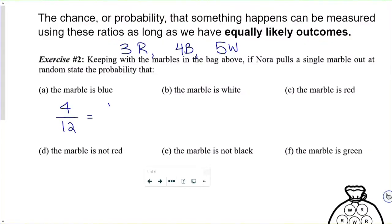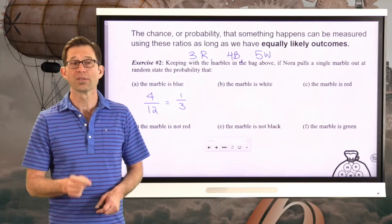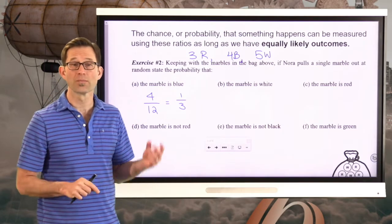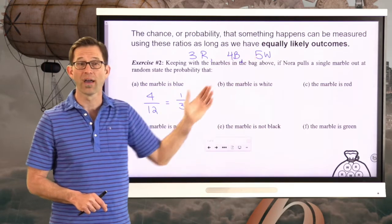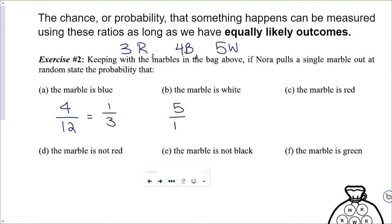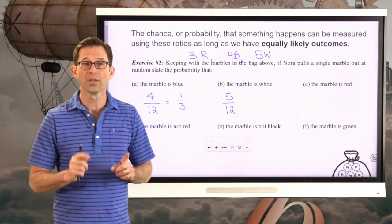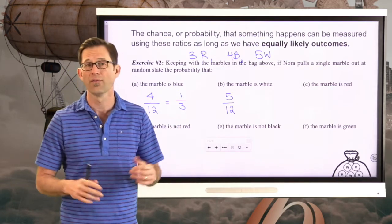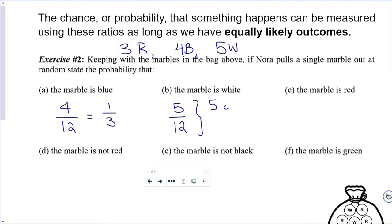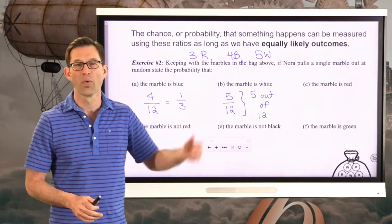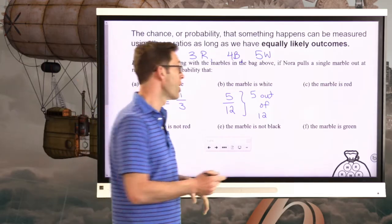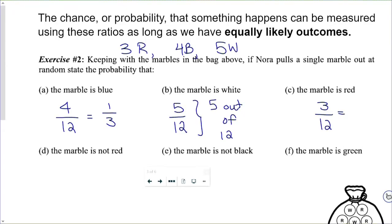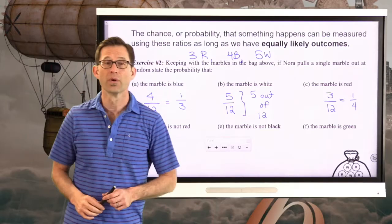A probability ratio is a fraction. Oftentimes it can be left in its unreduced form; sometimes your teacher will want you to reduce it. If it doesn't say you have to reduce it, either answer is great. The probability the marble is white is 5 twelfths. Ratios are so common in probability that you'll even hear teachers say things like 'five out of twelve' — five occurrences out of twelve, the marble will be white. Four out of twelve, the marble will be blue.